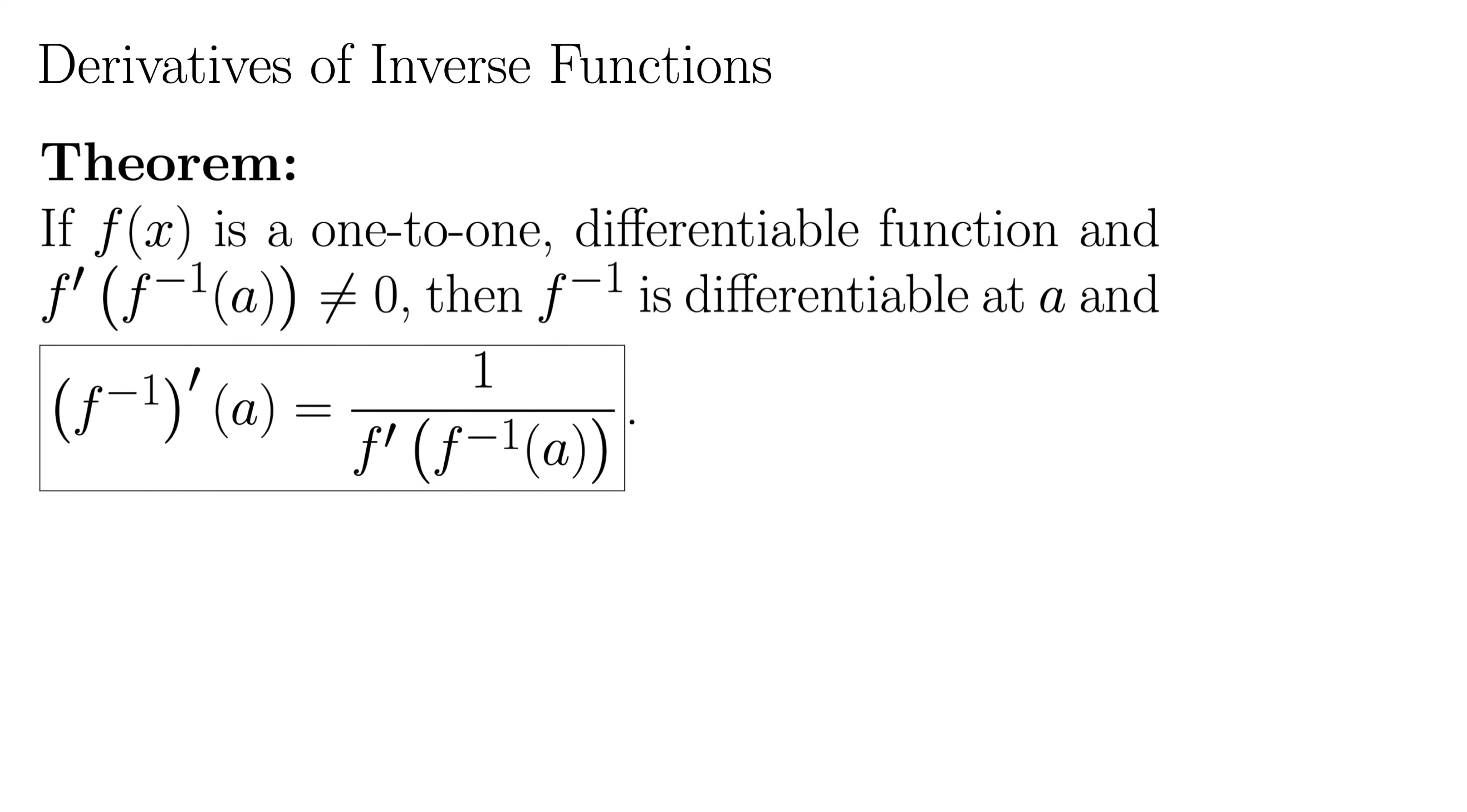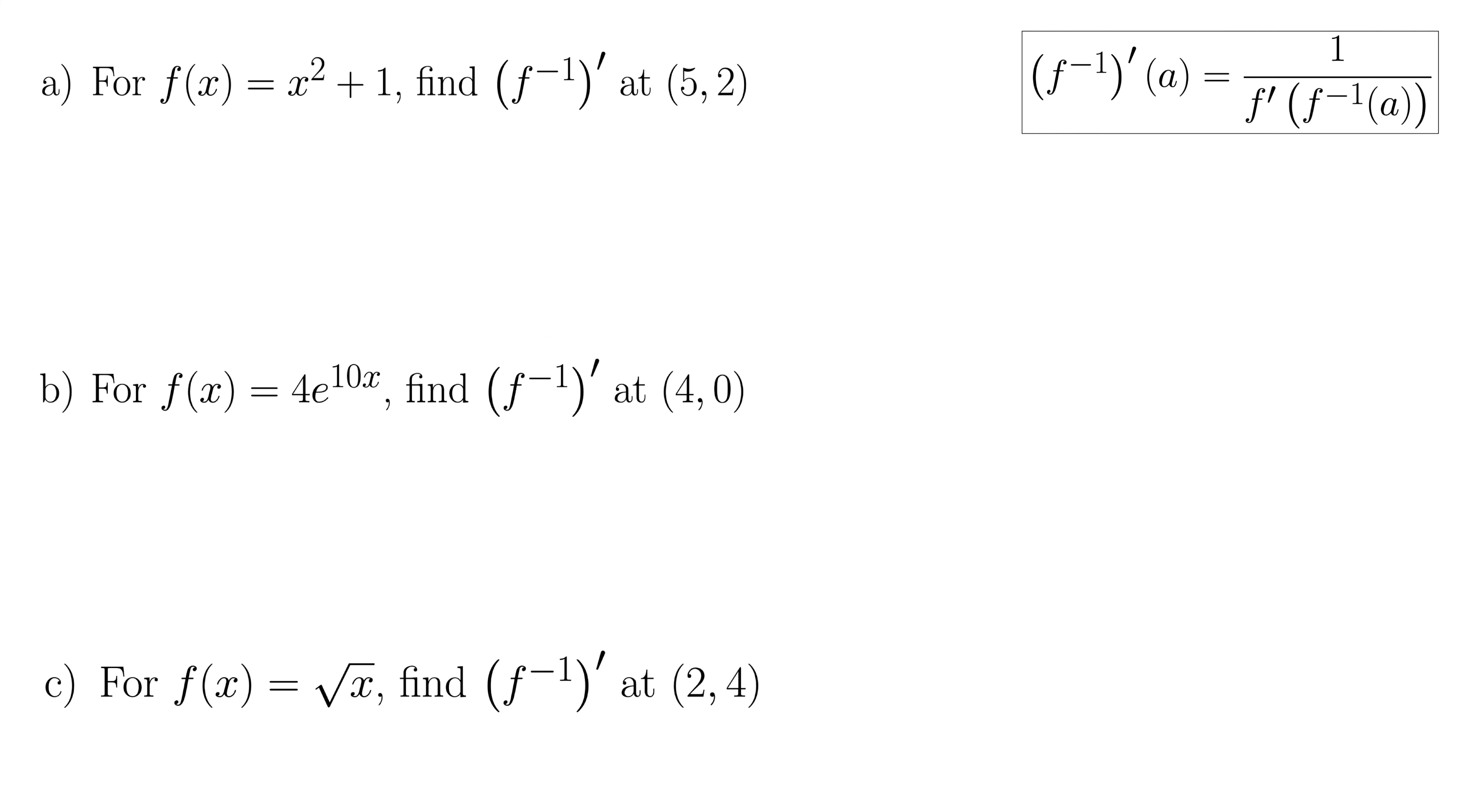So let's see how this works on some examples. Now luckily for these examples, we just need the result of the theorem. So I'm not going to worry about all the hypotheses here. I'm just going to grab this boxed result and use that on these exercises just to get a feel for how this works. So here we have three examples of finding the derivative of an inverse at a point. Let's take a look at part a. It says for f(x) equals x² + 1, find f⁻¹'(a) at the point (5,2).